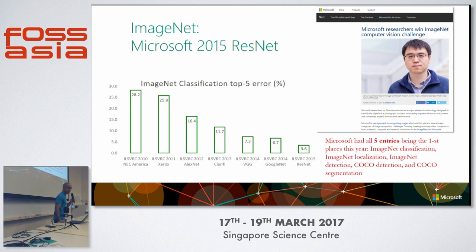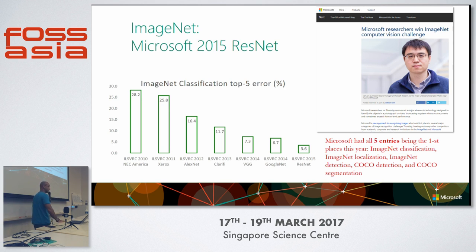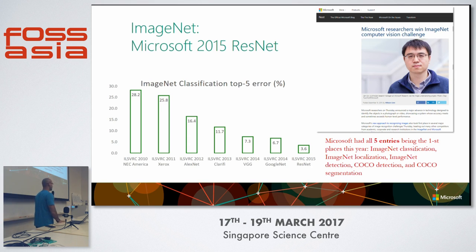Speaking of image recognition, many of you might know the ImageNet dataset — a massive dataset of images like cats, dogs, bicycles, chairs. There's a competition that's been going on across a variety of academic groups and organizations trying to classify images with as low an error rate as possible. In 2015, Microsoft got the lowest error rate — a little under 4% — which was unheard of at the time, a big jump from the previous year where Google excelled.